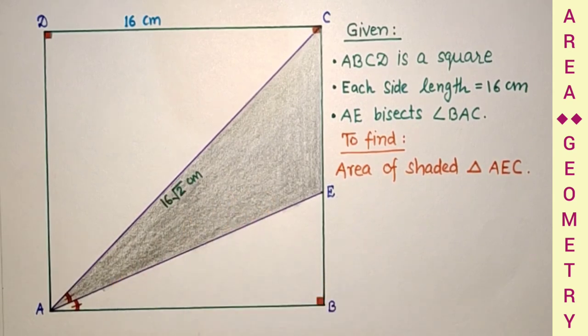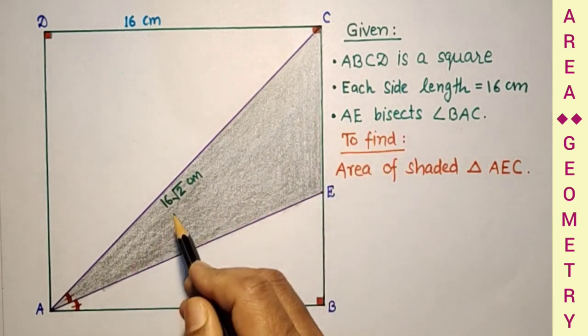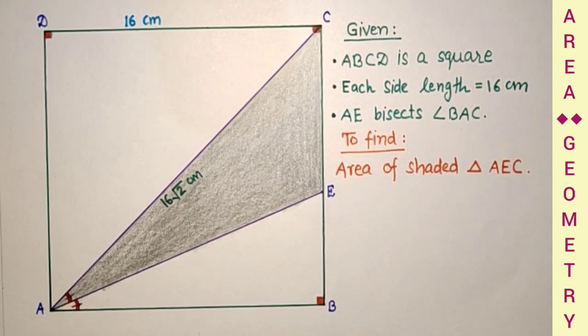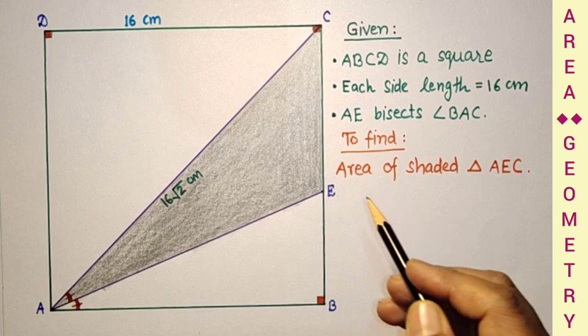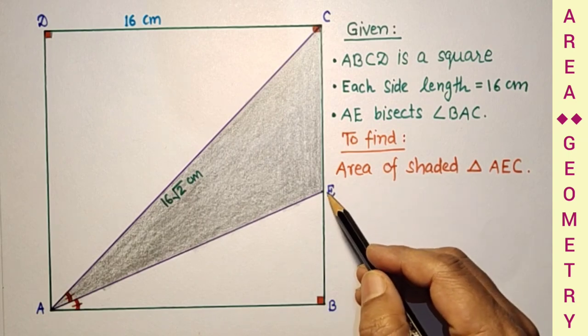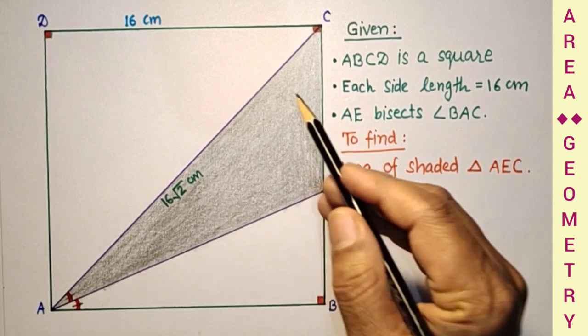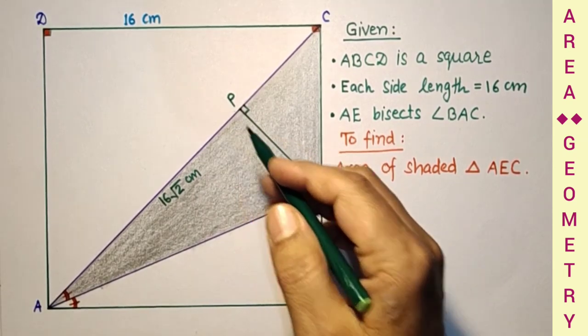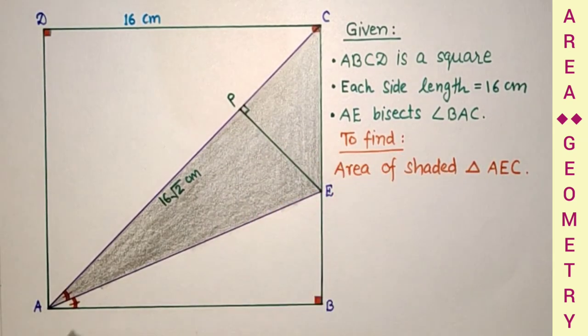We need this shaded portion's area. This diagonal we found as 16 root 2 cm. We have to do some construction. If we draw perpendicular from this point to AC, here EP is drawn perpendicular to AC.